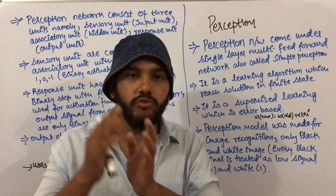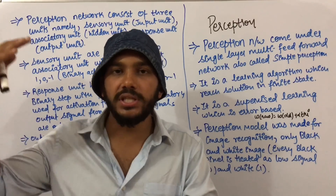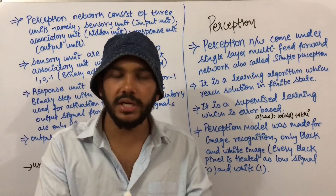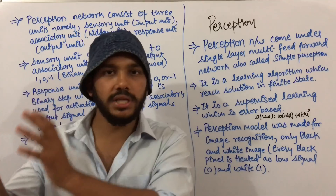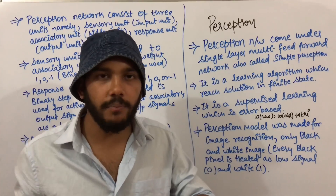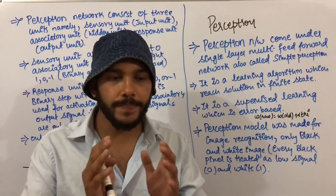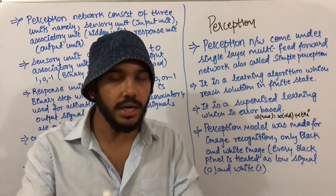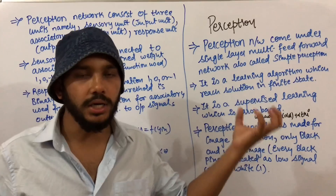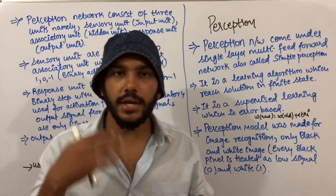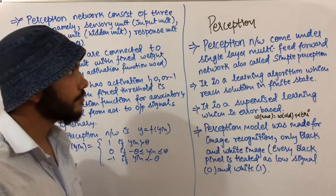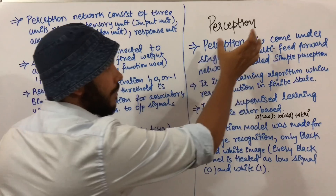We will compare this calculated weight with the actual output, and we will calculate what is the error between the weight calculated and the actual weight. Now the weight will be updated with a new weight, which will be the old weight plus the learning weight learned from the network. Finally, in finite steps it will converge to the solution.